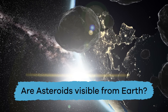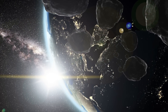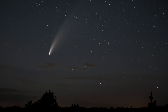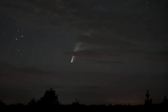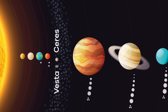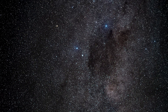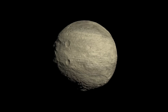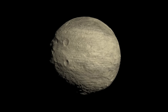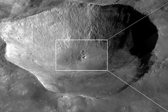Are asteroids visible from Earth? Most asteroids cannot be seen from Earth without using a telescope. However, one asteroid named Vesta can occasionally be seen from Earth with the naked eye. Vesta is the second largest object in the asteroid belt and also the brightest asteroid in the sky. Vesta can be seen when it's in the right position and if the sky is very dark. One cool thing about Vesta is that it has a giant crater on it that is almost as big as the asteroid itself.